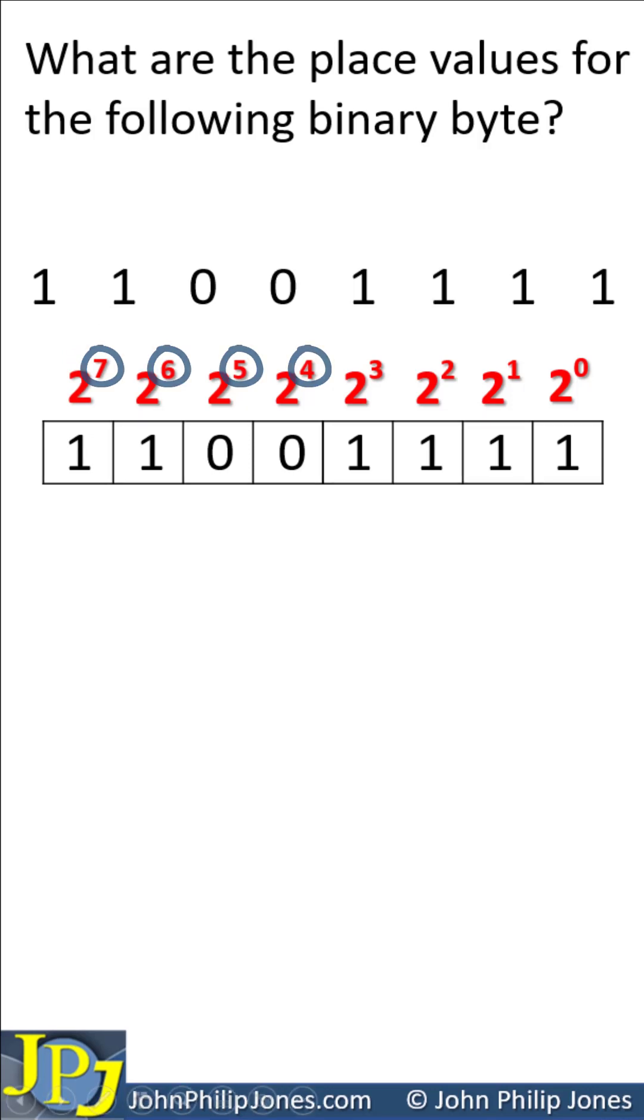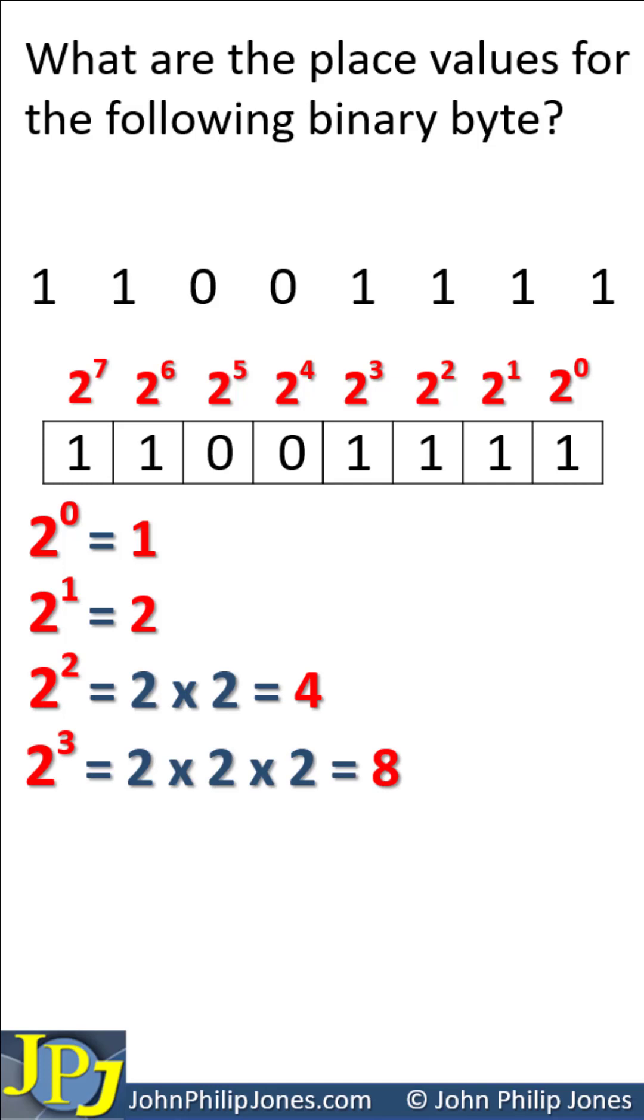Let's remind you of the powers of 2. 2 to the 0 is 1, 2 to the 1 is 2, 2 to the 2 is 2 times 2 which is 4, 2 to the 3 is 2 times 2 times 2 which is 8, and we can carry on to 2 to the 7, which we can see is 128.